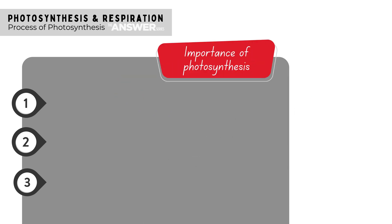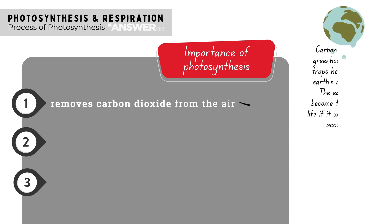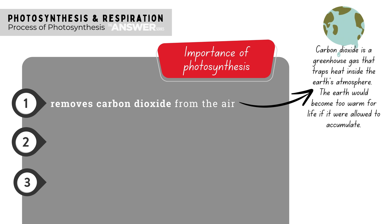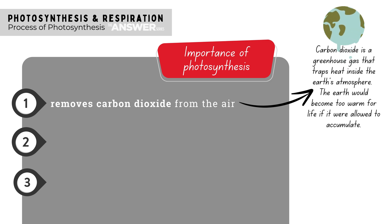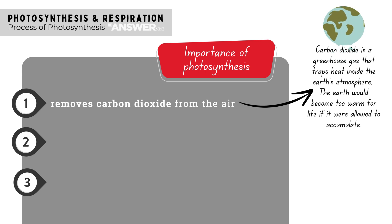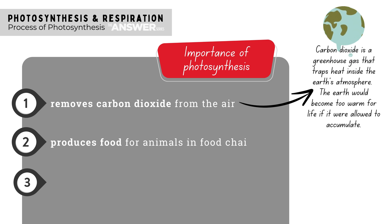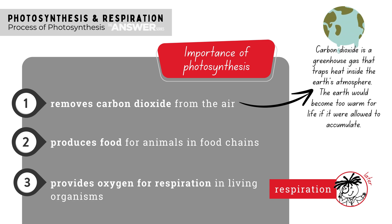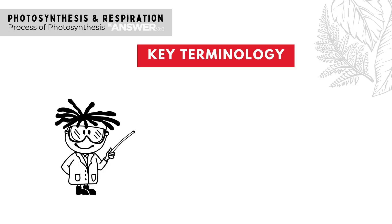Photosynthesis is therefore important for all living organisms because of three things. First, it removes carbon dioxide from our atmosphere — carbon dioxide is a greenhouse gas that traps heat inside the Earth's atmosphere, and if it were allowed to accumulate the Earth would become too warm for life, so photosynthesis helps regulate our Earth's temperature. Second, photosynthesis produces food for animals in food chains. Third, it provides oxygen for respiration in living organisms.